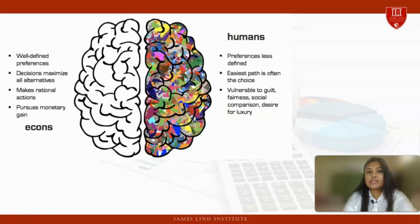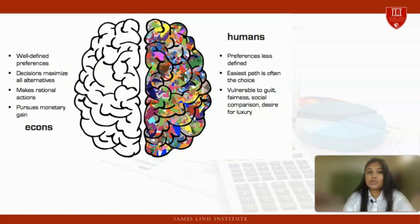Let us understand the differences between humans and econs. Humans are imperfect, emotional, and full of bias, while econs on the other hand are perfect, calculated, and objective. Econs usually refer to the economic or social science concept that analyzes the production, distribution, and consumption of goods and services.